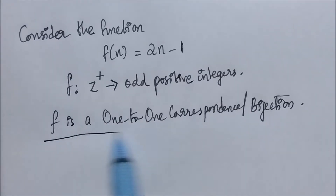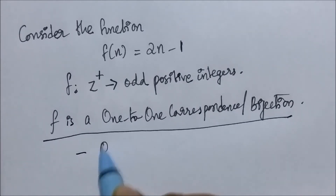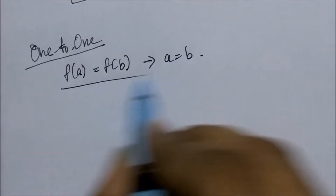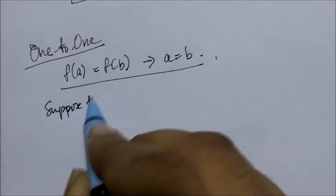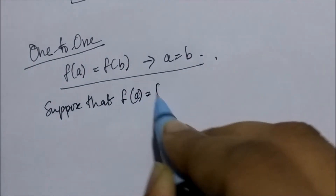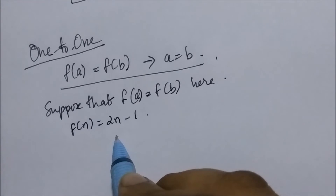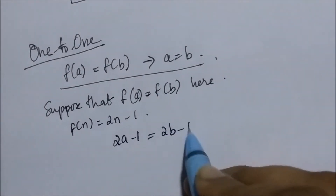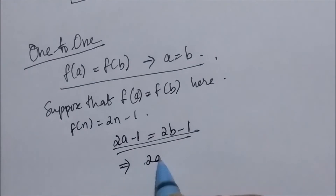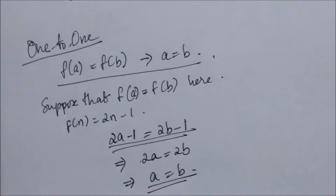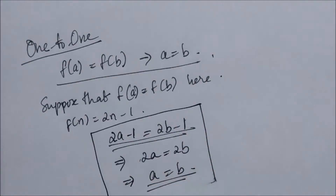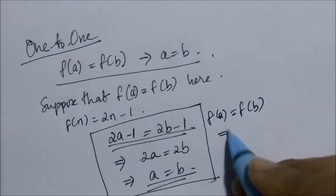To prove f is a bijection, we have to show that f is both one-to-one and onto. Let's prove f is one-to-one. When a function is one-to-one, f(a) = f(b) implies a = b — no two elements in the domain map to the same element in the codomain. Suppose f(a) = f(b). Since f(n) = 2n − 1, we get 2a − 1 = 2b − 1, which implies 2a = 2b, which implies a = b. So f is a one-to-one function.